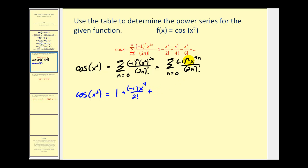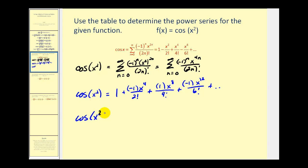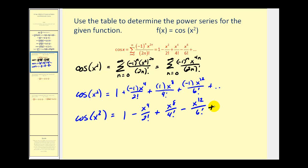When n is two, we'll have positive one times x to the eighth divided by four factorial. When n is three, this will be negative one times x to the twelfth divided by six factorial, and so on. So cosine x squared equals one minus x to the fourth over two factorial plus x to the eighth over four factorial minus x to the twelfth over six factorial, and so on.